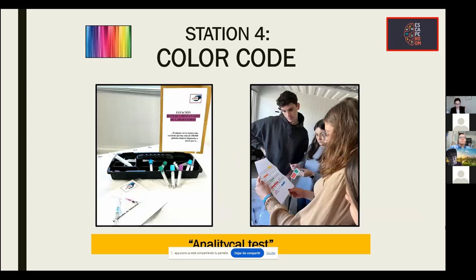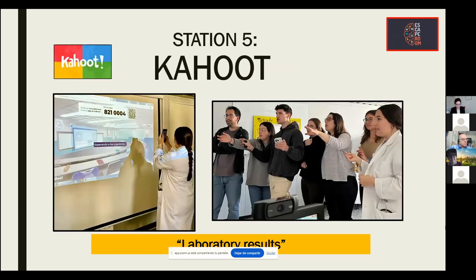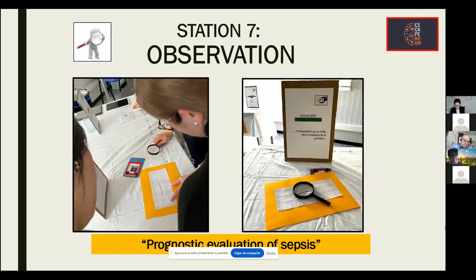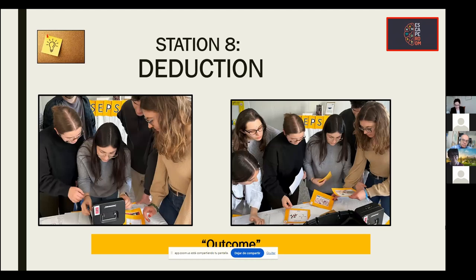A color code is used in station number 4, the analytical test, where students can interpret the analytical results requested for their patient. At station number 5, a student is able to access laboratory results and other complementary tests through a hood. Through numerical codes and their previous knowledge, in station number 6, students reach a differential diagnosis of what is happening to their fictional patient. The prognostic evaluation of sepsis in station number 7 is carried out through observation. Finally, through deduction and the remaining tests, they reach the definitive diagnosis as the outcome of the clinical case.